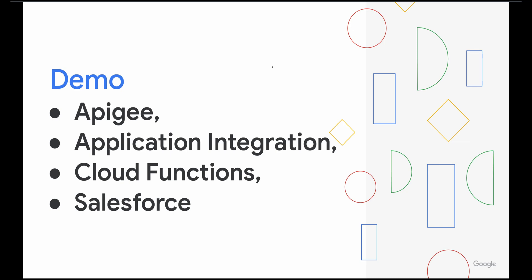Today we are going to see a demo of Apigee, Application Integration, Cloud Function, and Salesforce working together. We will see how we can unlock the potential of our organization's API management and application integration. In this demo, we will see firsthand how Apigee fortifies your APIs with robust security, quota management, and OpenAPI spec validations for your REST API, while Application Integration empowers you to seamlessly orchestrate internal and external services with features like scatter-gather patterns, message payload manipulation, and connectors to over 100 external services like Salesforce, Workday, and more.